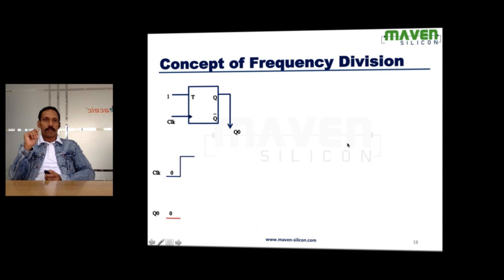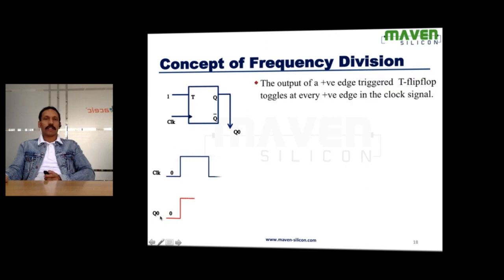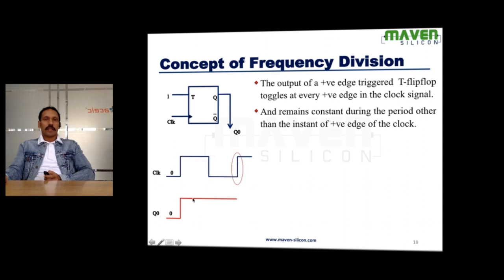So here, this is the clock. Initially, the output is 0. Look at here. At the clock edge, the output toggles. In the next clock edge, the output toggles from 1 to 0 like this.